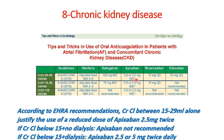For apixaban: if creatinine clearance is between 30 and 50, use 5 mg twice daily or 2.5 mg twice daily according to age, body weight, and serum creatinine. Per new ERA recommendations, creatinine clearance between 15 and 29 alone justifies reduced-dose apixaban 2.5 mg twice daily regardless of age and body weight. If creatinine clearance is below 15 with no dialysis, apixaban is not recommended. With dialysis, use apixaban 2.5 or 5 mg twice daily based on body weight and age — full dose if body weight above 60 kg and age below 80.